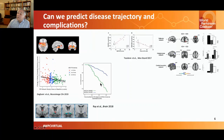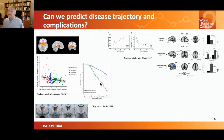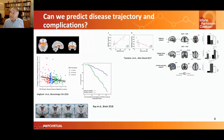A group in Italy has looked at patterns of activation and connectivity in the brain using MRI in people who have early Parkinson's and are not yet on treatment. They can predict the future development of impulse control disorders in these people.